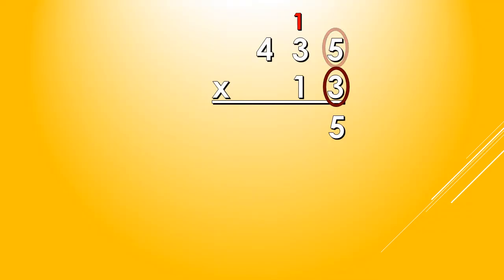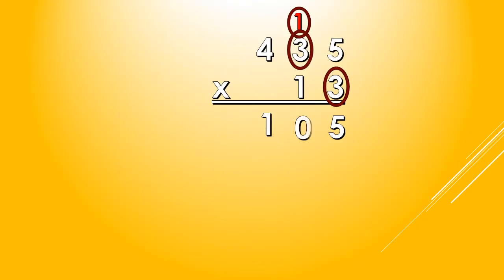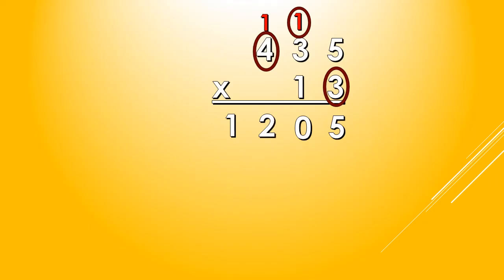Let's continue. We multiply 3 and 3. 3 times 3, we get 9. And then, we add this 1 that we regrouped. So, 9 plus 1, we get 10. Again, we regroup 1 to the 100's place value, and then we multiply. 3 times 4, we get 12. And then, again, we add what we regrouped. 12 plus 1, we get 13.